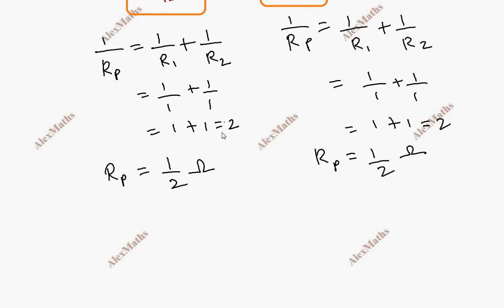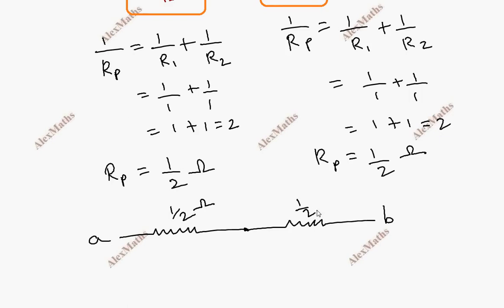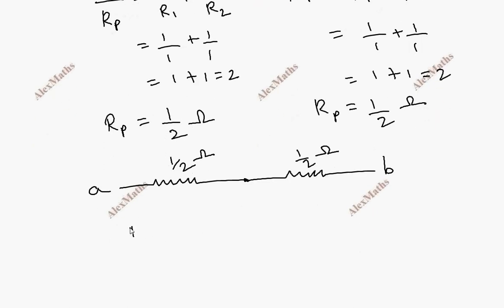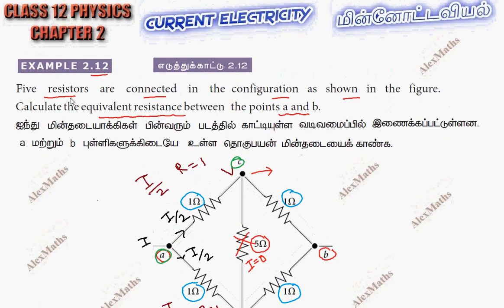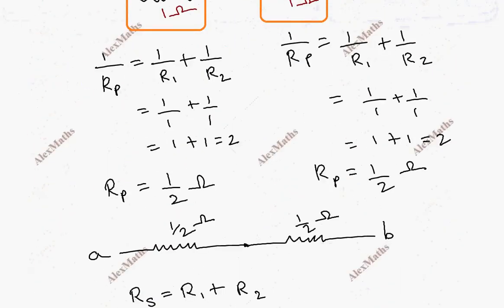Now we will return to the diagram. Again, there is an equivalent resistance between terminals A and B. This is half ohm and this is half ohm. Now, these are in series. The equivalent resistance is half ohm plus half ohm, total adding to 1 ohm. So in the circuit, it is equivalent — between the A and B terminals — to 1 ohm. So this is the equivalent resistance when 5 resistors are connected; the equivalent resistance between A and B is 1 ohm.